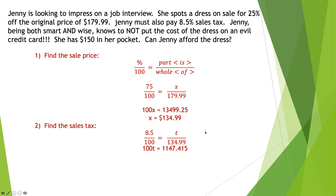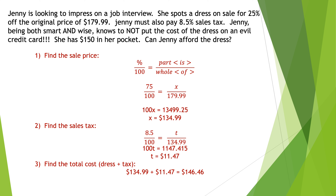Cross multiplying: 100t equals 1,147.415. Dividing by 100, I get $11.47 — that's the tax. Now, Jenny is very smart and absolutely refuses to use a credit card. She has $150 in her pocket. Can she afford the dress? I add the dress price and the tax: $134.99 + $11.47 = $146.46. Lo and behold, Jenny can afford the dress.